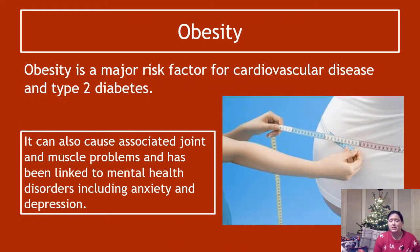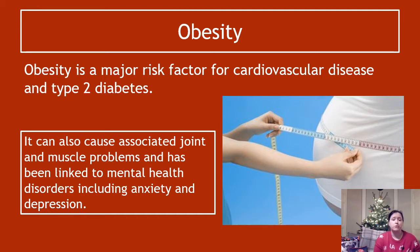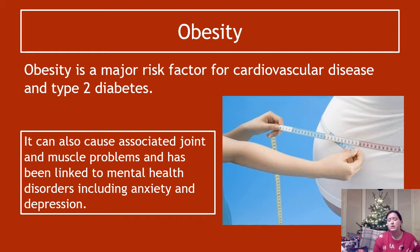Obesity is a major risk factor for cardiovascular disease and type 2 diabetes — this is something you should know from life, but it's also required knowledge for the Higher Human course. The stuff in the box is not essential, but obesity can also cause associated joint and muscle problems, as people with increased weight put more strain on those areas. It's also been linked to mental health disorders including anxiety and depression — these can be a cause of obesity, but people who have obesity can also develop these mental health disorders depending on the individual and their circumstances.